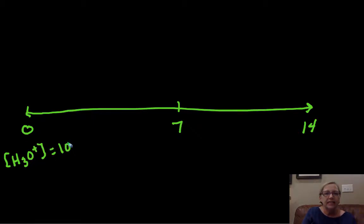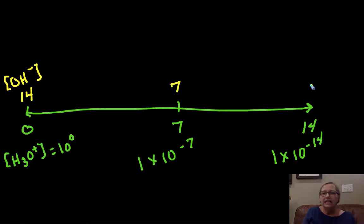So if I have, this would be a pH of 0, so this would mean my H3O+ is equal to 10 to the 0. Here it's 1 times 10 to the minus 7. Here it's 1 times 10 to the minus 14. Now if I looked at my hydroxide, this would be 14, 7, and 0. So that would be my pOH scale.